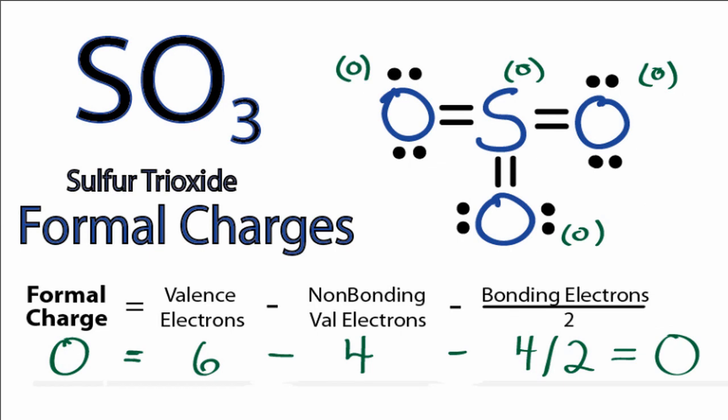If we add up the formal charges for each atom, we find that the formal charges for the entire SO3 molecule is zero, and that makes sense because SO3 is not a charged molecule. So that's it. Those are the formal charges for SO3.